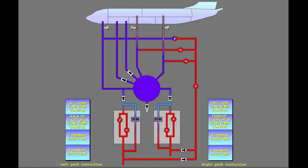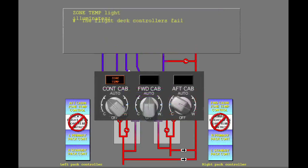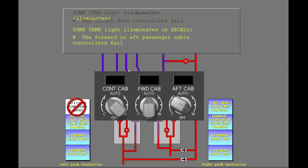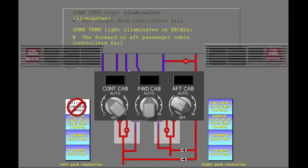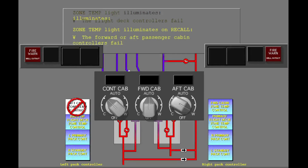The zone temperature light also illuminates if there are failures in the pack controllers. If the primary and secondary flight deck controller do not operate, the flight deck zone temperature light illuminates and the packs operate independently. If a flight deck temperature controller, the forward passenger cabin controller, or the aft temperature controllers fail, the related zone temperature light illuminates when recall is selected.